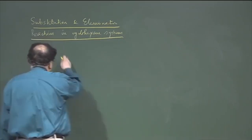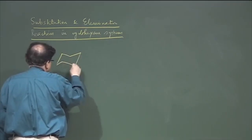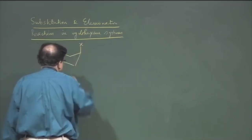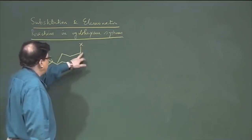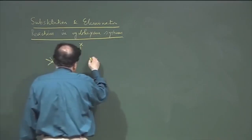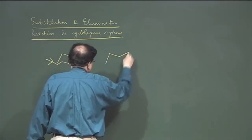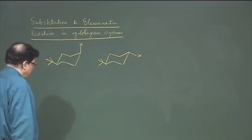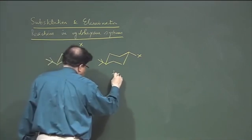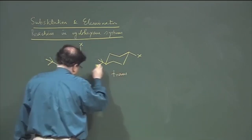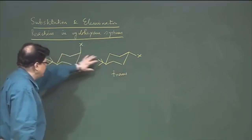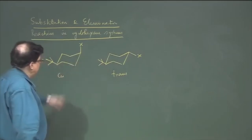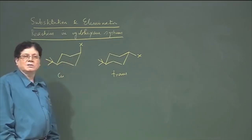If we take a cyclohexane — suppose this is 4-tert-butyl cyclohexane with a substituent with a leaving group at C1 — this can exist in two diastereomeric forms: one is the cis isomer, another is the trans isomer. The t-butyl group is there so that the conformations are locked; if it were not there, they would become conformations and can flip to each other. We want to study the behavior of these towards substitution reactions.